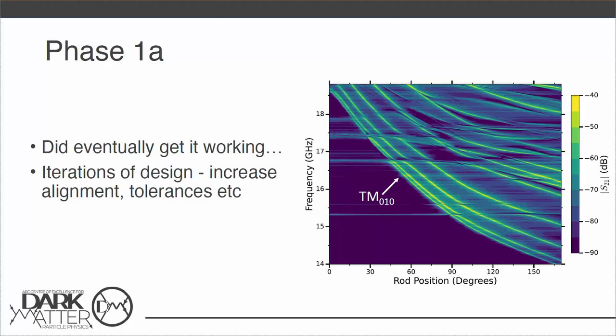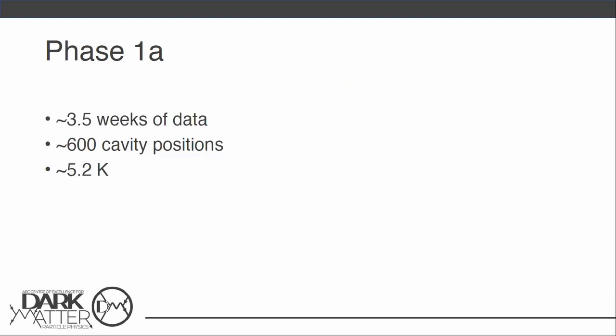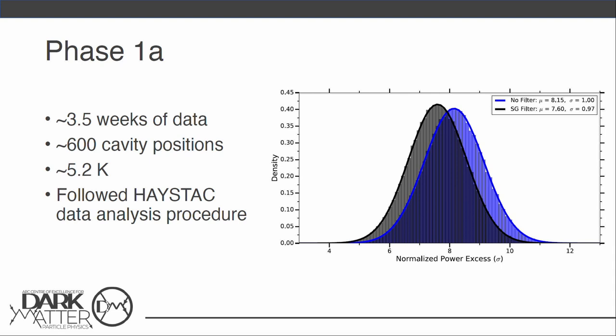We did eventually get it working. There you go. You can see it tunes all nicely. Iterations of design, just getting better at aligning the rod. We ultimately had to take a bit of a hit in terms of the rod gaps in order to get the thing to tune nicely. But as you can see, the mode interactions are not too terrible in this kind of range that we did most of the run. That experiment ended up running for about a month, tuned the cavity to a bunch of positions. We ran it at 4 Kelvin, or with the amp running 5.2. Again, the idea here was that the amps are HEMT anyway, so we're not going to necessarily gain by cooling the thing down, and we wanted to just do what we could do simply, with gear on hand.